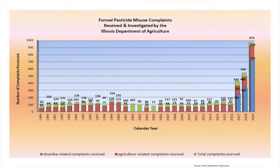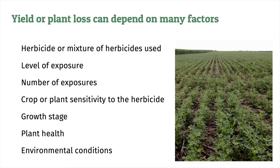Formal complaints of pesticide misuse also increased dramatically with the increased use of dicamba across the landscape, further emphasizing the risk posed by the widespread use of volatile herbicides. The severity of symptoms and related yield or plant loss depend on many factors, including the type of herbicides used, the level and number of exposures, the plant sensitivity to the herbicide, the plant's growth stage, overall plant health, and external environmental conditions.